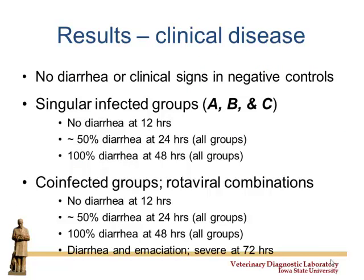Results: negative controls stayed negative. Singular infected groups — all of A, B, and C — didn't have diarrhea at 12 hours, 50% had diarrhea at 24 hours, and almost everybody had it at 48 hours. Very similar no matter what the combination was — no diarrhea at 12, yes 50% at 24, all of them at 48. But the severity was a little more striking with emaciation and dehydration when multiple groups were combined.